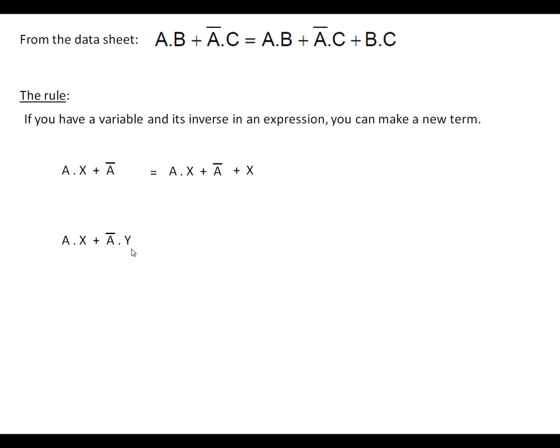Here's another example. This time we've got two things with the variable and its inverse. We spot where the variable is and where its inverse is, then write out the expression again. We notice what goes with the A and what goes with the not-A - we've got X and we've got Y. What we do is AND them together as a new term added to the previous term.